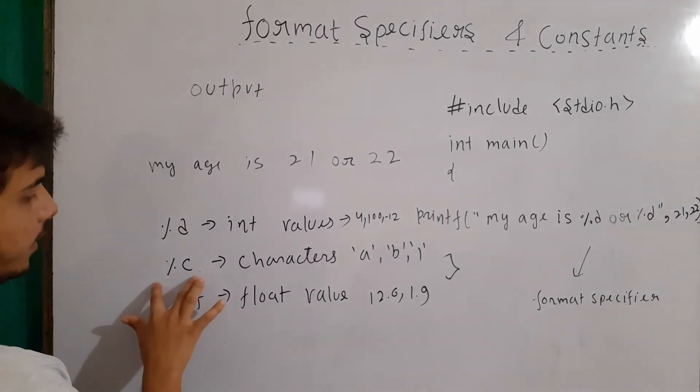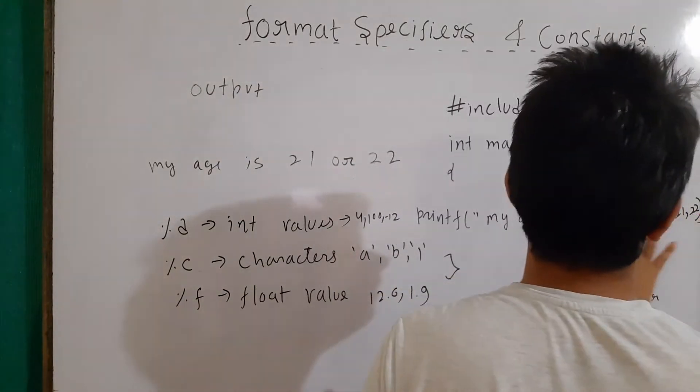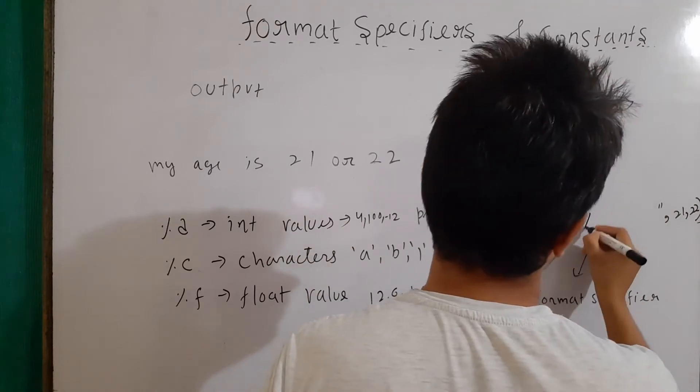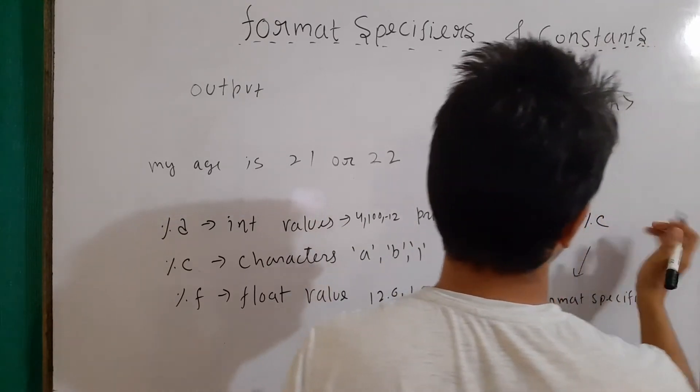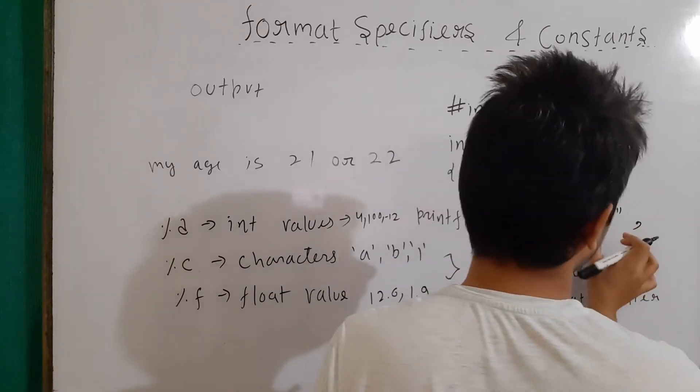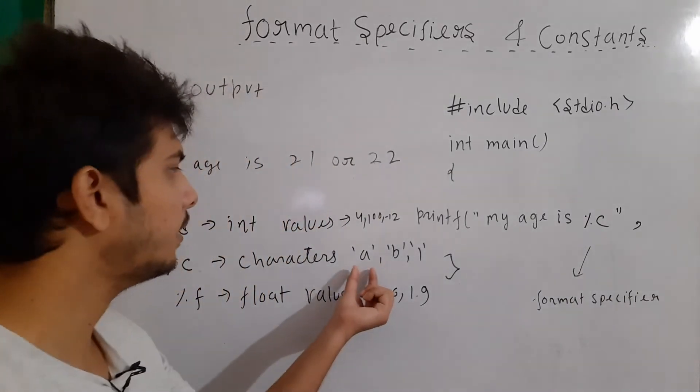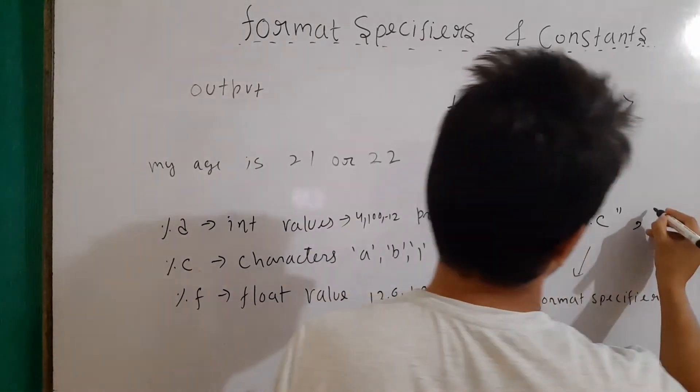Now, let's say I want to use %c format specifier. So what I will do, I will instead of writing here %d, I'll write here %c. And then I'll write, I close it. And then I write a character. Now whenever we are using %c, we have to use the character in the single quote. So let's say I'll write here E.